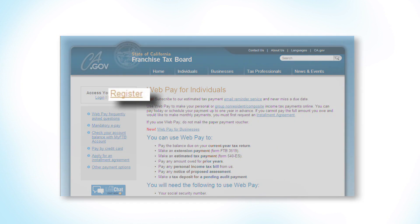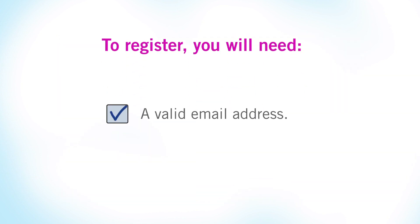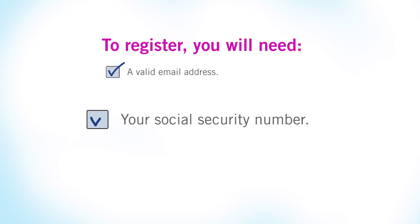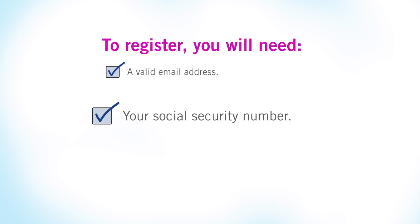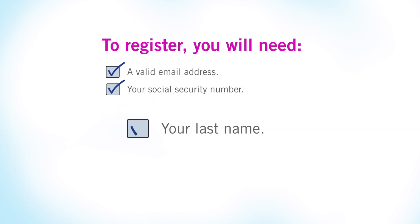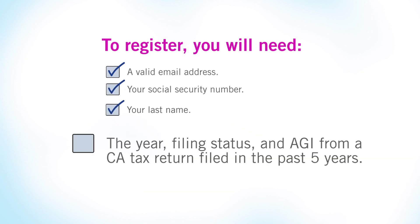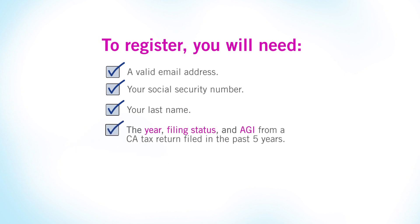Just click on register and provide this information: a valid email address, your social security number, your last name for the most recently filed tax return, along with the year, filing status, and California Adjusted Gross Income, or AGI, from a California tax return filed in the past five years.